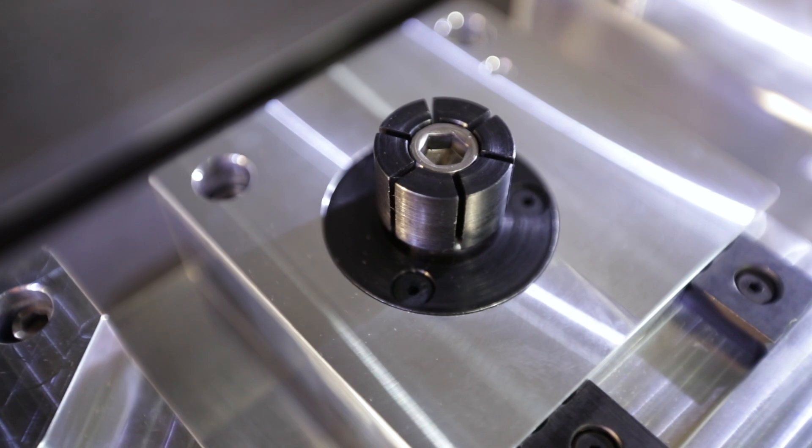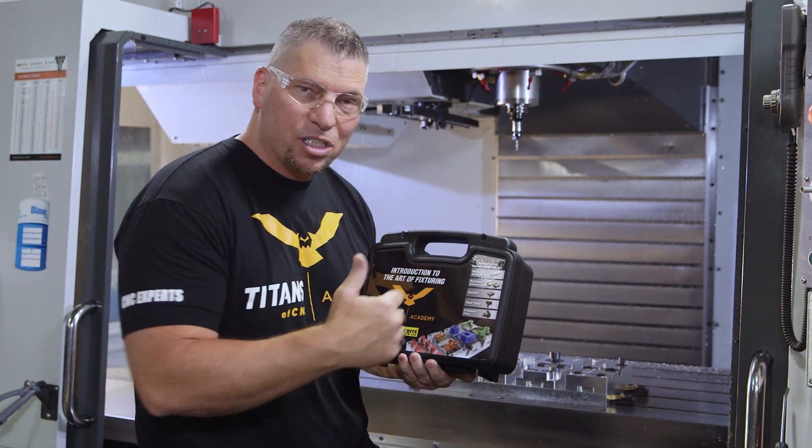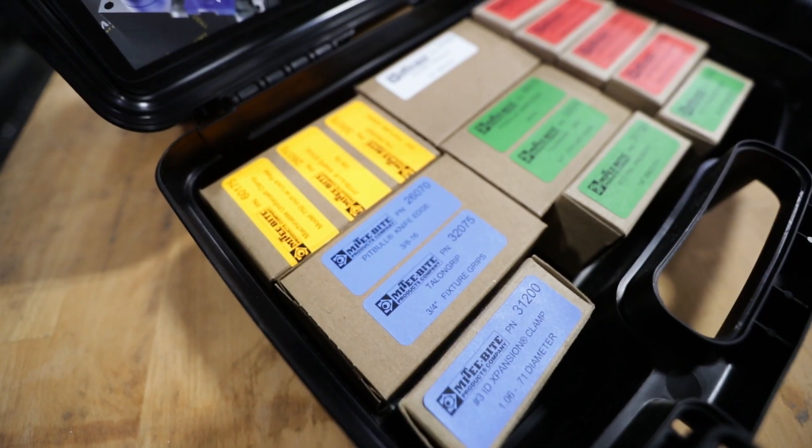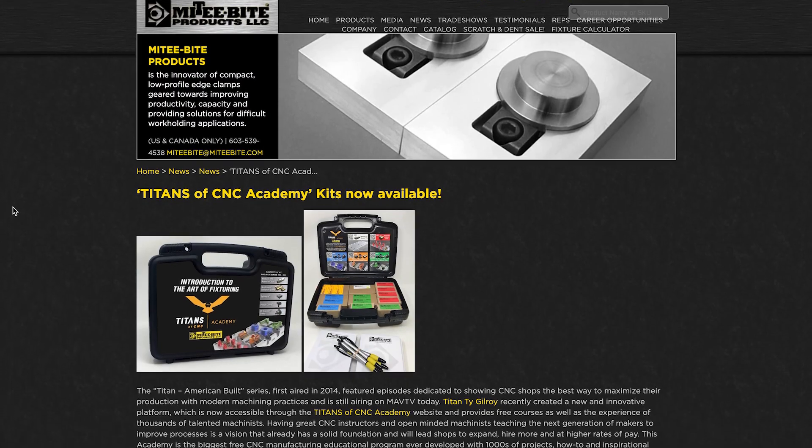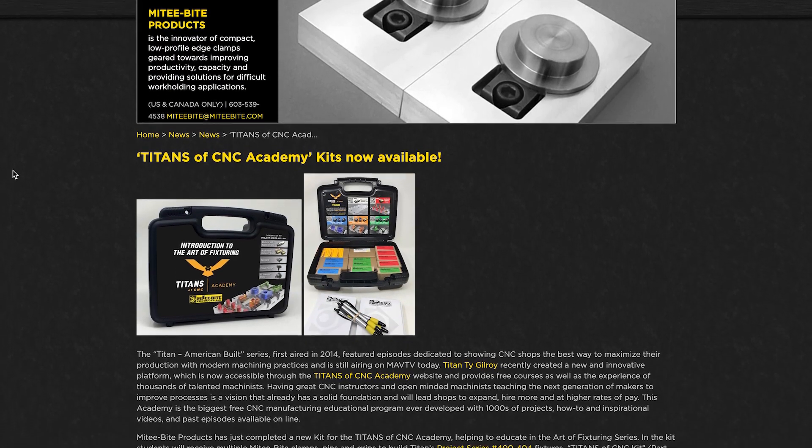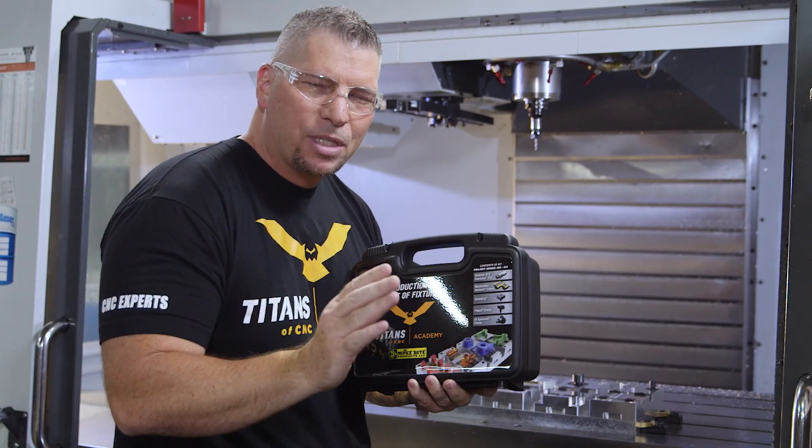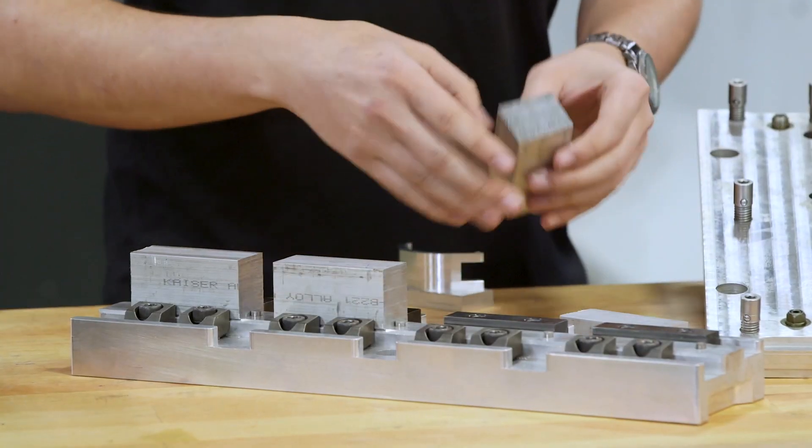What is awesome is that Mighty Bite actually stepped in and said, 'Hey Titan, if you're actually teaching this level of curriculum, we'll put a special package together and put all the clamps and all the work holding tools that you need for this system in this kit, and we'll give it to the teachers and the students and the machinists at an incredibly reduced price.' So all you need is a kit from Mighty Bite, everything else is free on the Academy, and boom there you go.